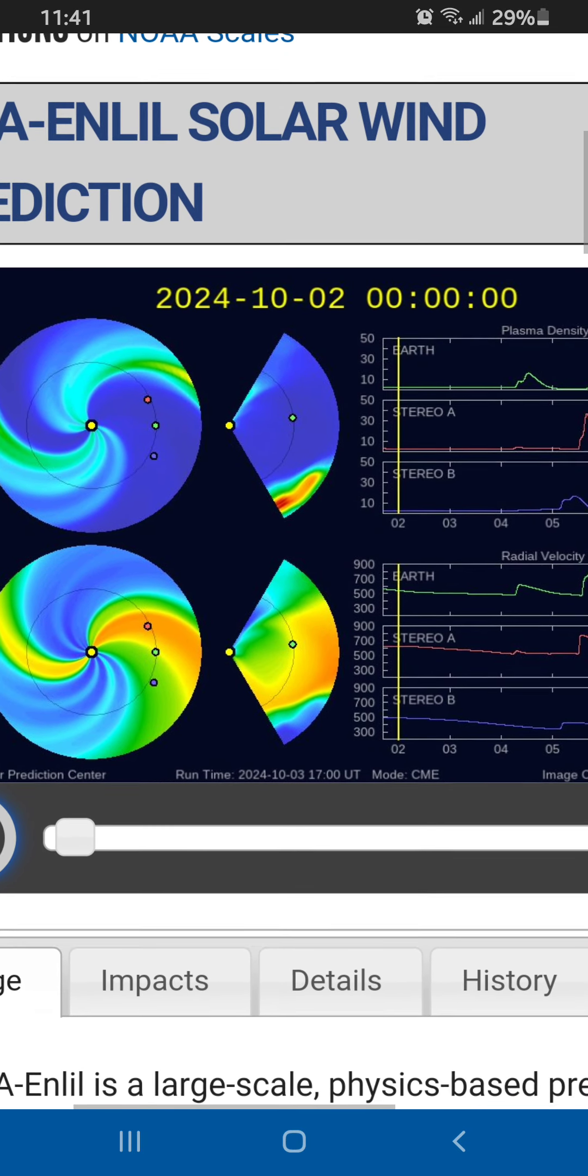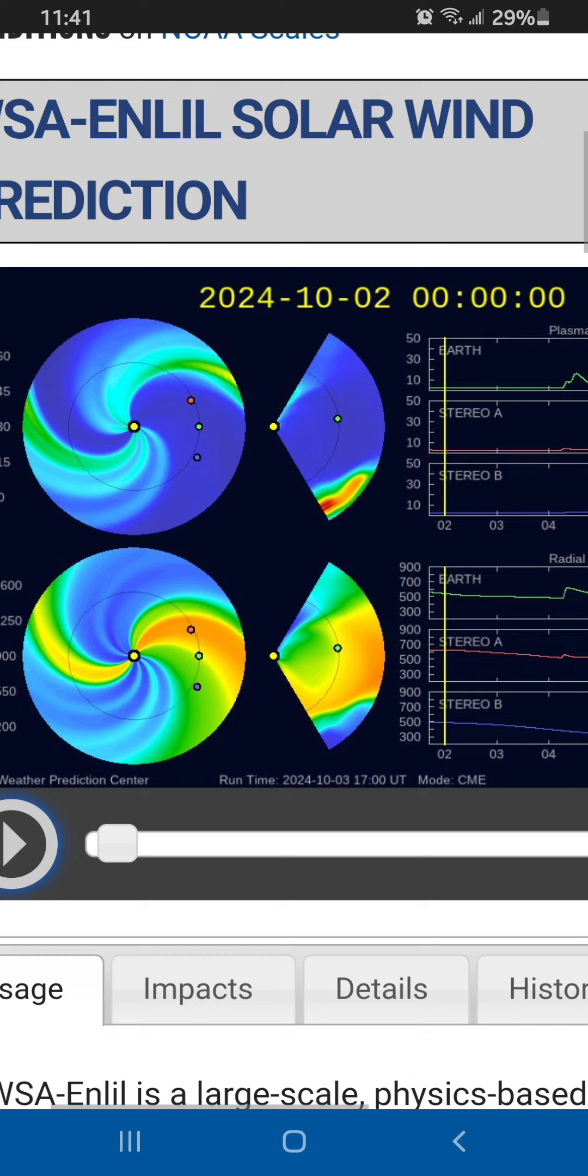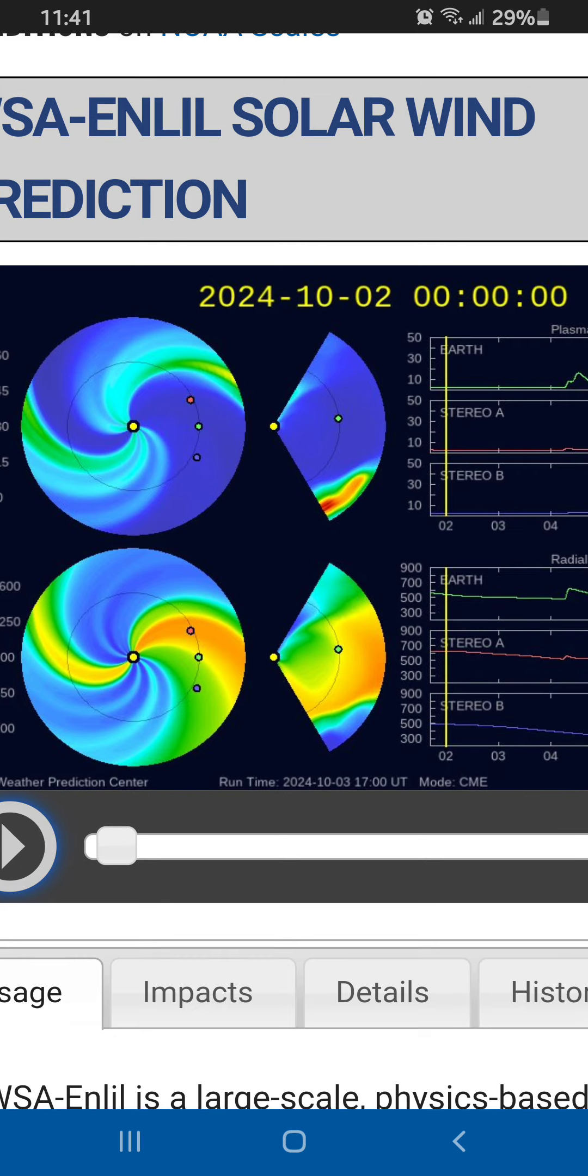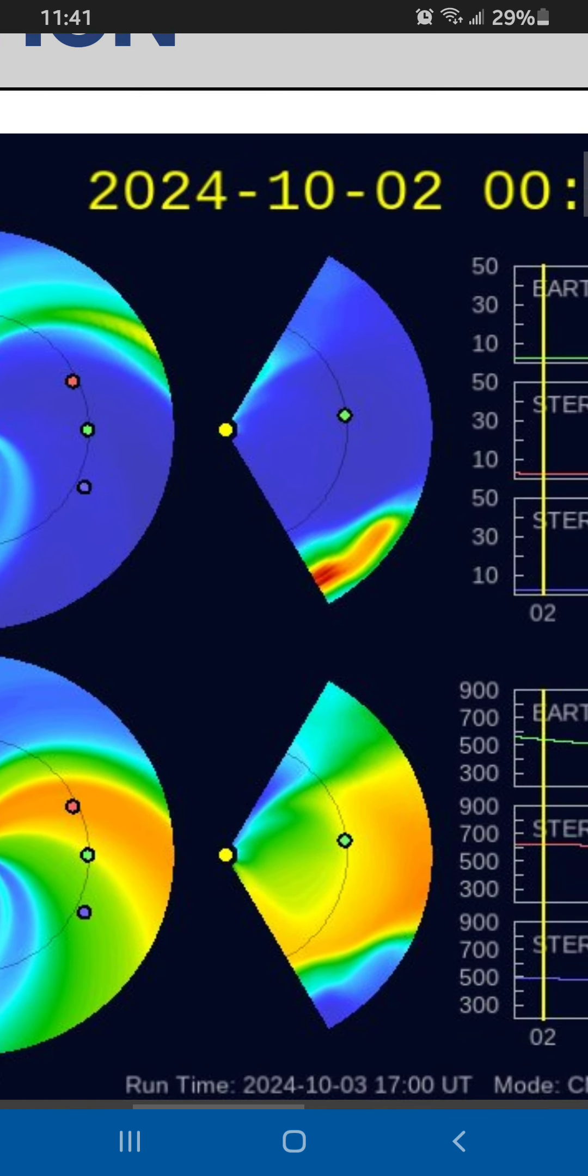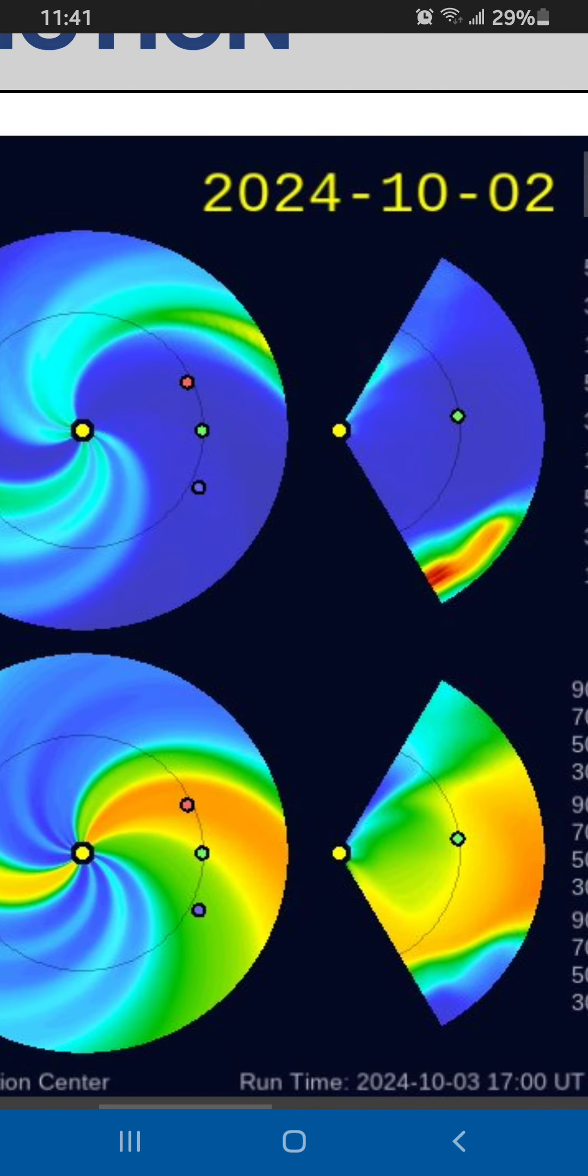So depending on where you're at in your region, you want to add the time and make that the correct time frame. This green circle over here, you see these green circles on these two partial circles in the middle, that green circle is Earth. I guess it's more of a square or a diamond.